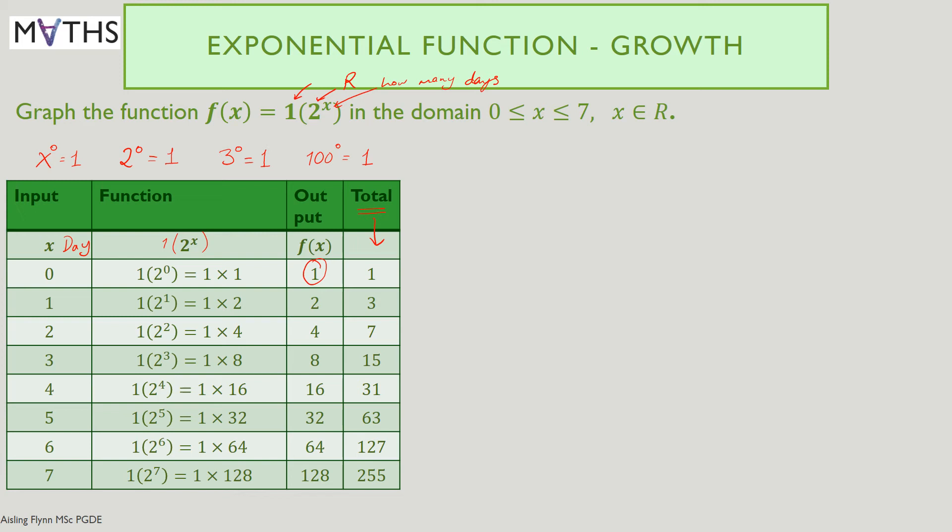We've continued down the table. Each time substituting the input value, how many days for the power of x. It means how many times should you multiply by 2. On day 1, it's 1 times 2. On day 2, it's 1 times 4, which is of course 2 times 2. On day 3, it's 1 times 8, so 2 times 2 times 2, and so on. You can see that the numbers start to rise slowly and then more rapidly as you get towards the end. The same can be said for the total.